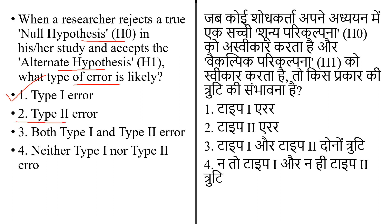The last option is neither Type 1 nor Type 2 error. The error happens when the null hypothesis is true but you reject it — at that time, a Type 1 error occurs. In this question, the situation is the same: the researcher is rejecting the true null hypothesis and accepting the alternate hypothesis, meaning they are making a Type 1 error.